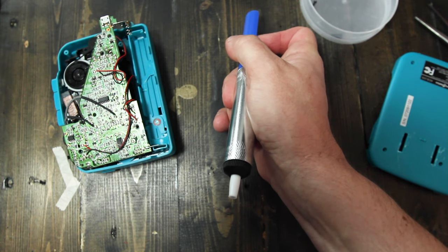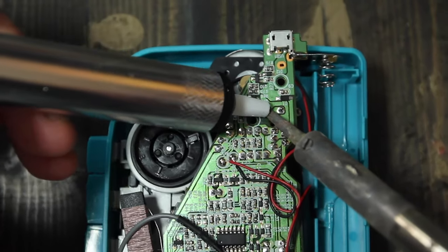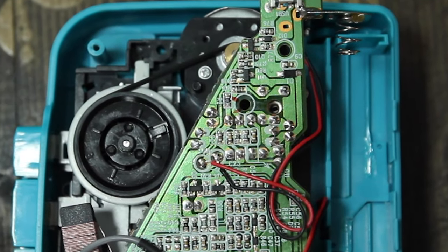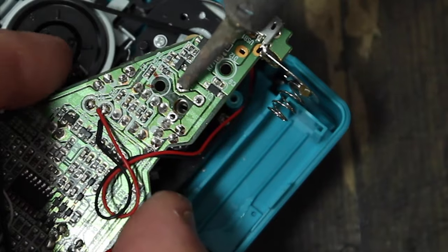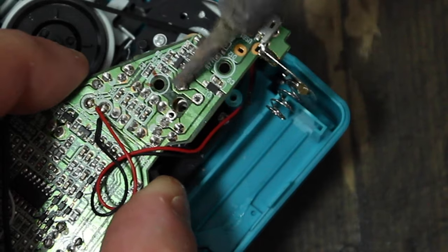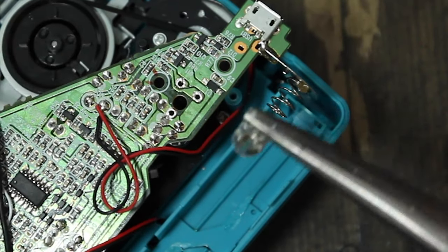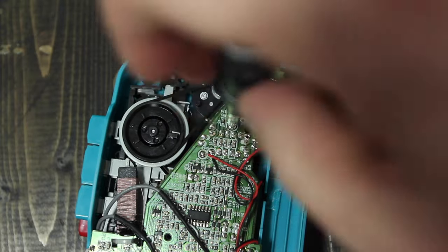For this part, I use a solder sucker to help remove the component. Melt the three leads with your soldering iron and suck up the excess solder. The potentiometer might be free at this point. If not, gently push the exposed leads through the board with the tip of your soldering iron. When it's free, just remove it and secure the board back in place.